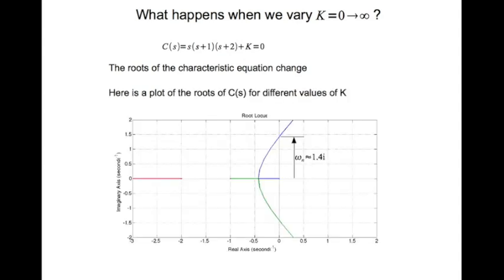Now here is a plot of the roots of C(s) as I change K. When K equal to 0, the roots are at 0, minus 1, minus 2. As I change K, these roots start moving. There are three roots. So there are three curves essentially: the blue curve, the green curve, and the red curve. So one root just remains real root. Goes to infinity, minus infinity. Two roots start moving towards each other and then they meet and then they go off like that.